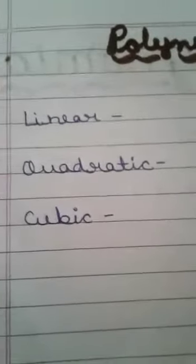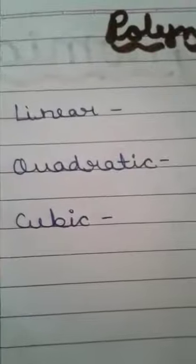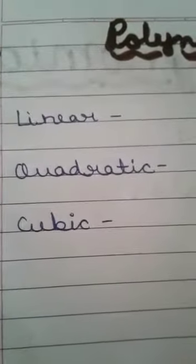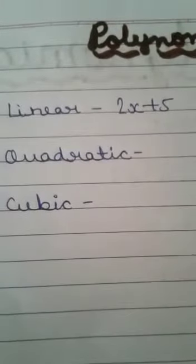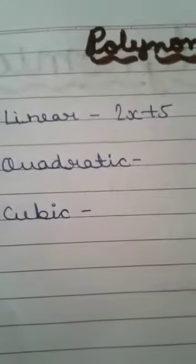There are three types of polynomial: linear polynomial, quadratic polynomial, and cubic polynomial. So let us take an example of each. Example of linear polynomial is 2x plus 5. Here the highest power of the variable is 1.